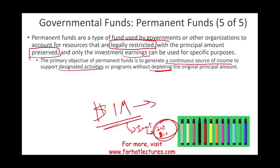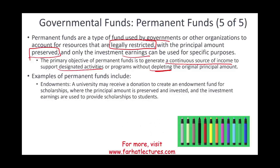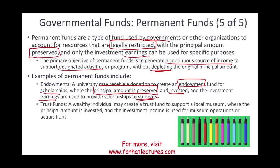The original principal amount remains for generations to come, while the money generated from it can be used. Another example is an endowment: a university might receive a donation to create an endowment fund — a form of permanent fund — for scholarships. Don't touch the principal; invest the money, and the earnings from the investment can be used to provide scholarships and help students with their education.